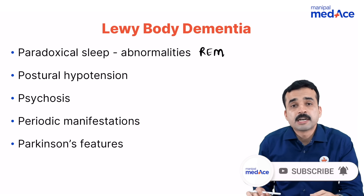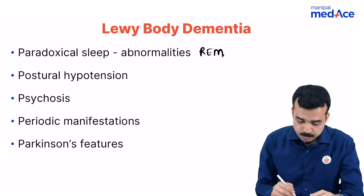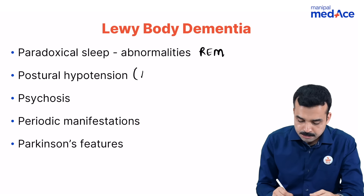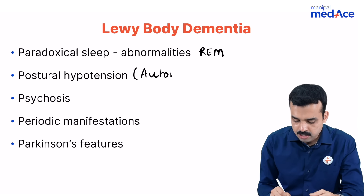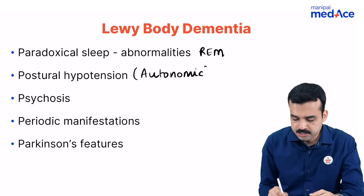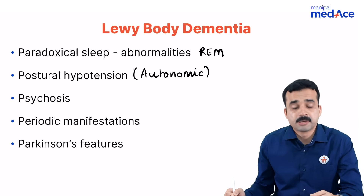The second P is postural hypotension. That means autonomic dysfunction occurs early and is a prominent feature of Lewy body dementia.